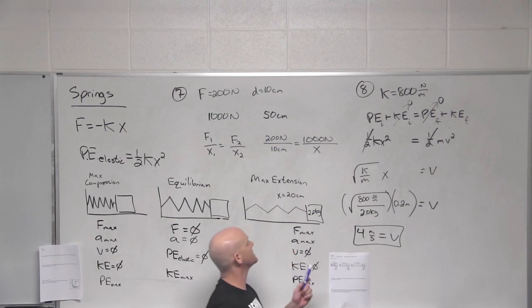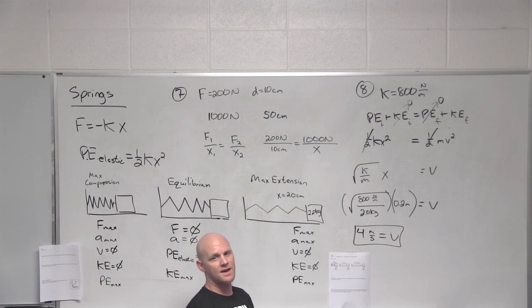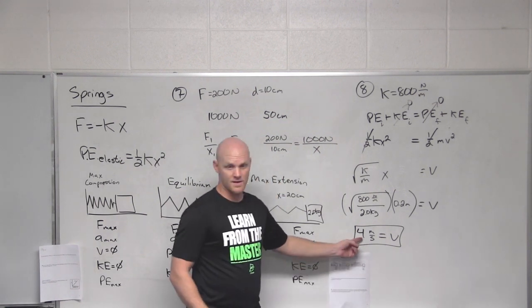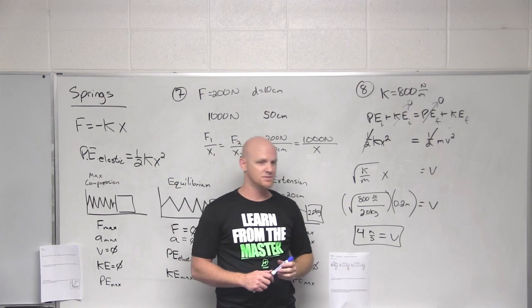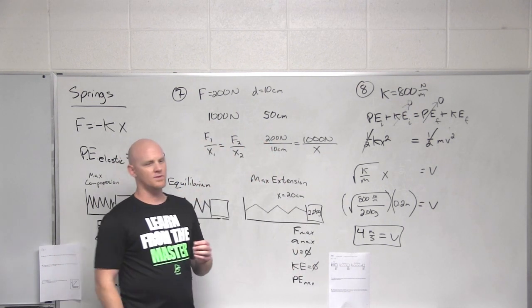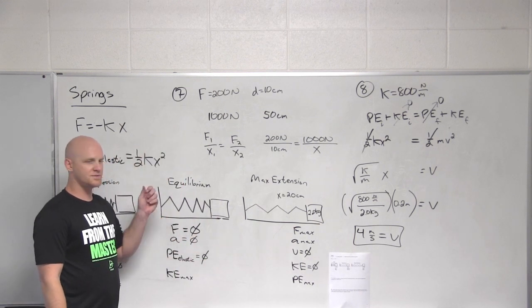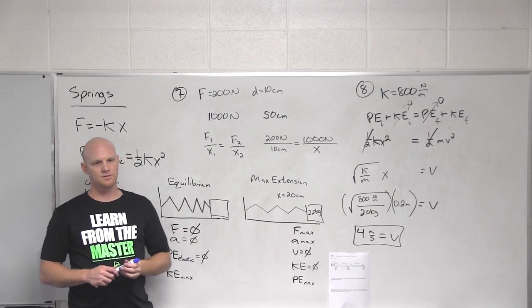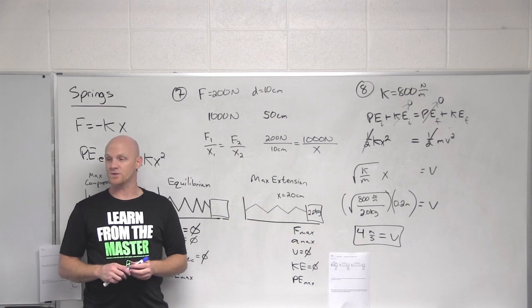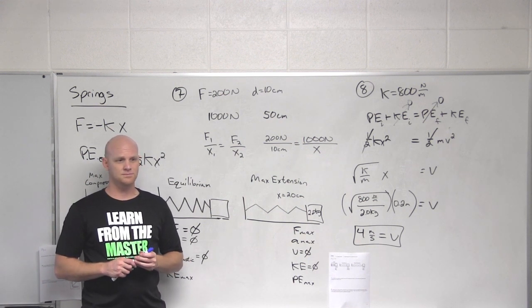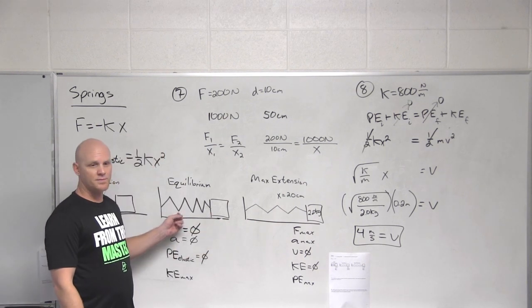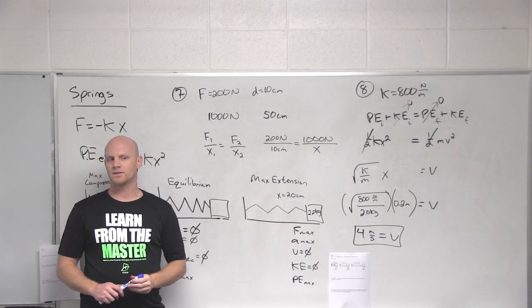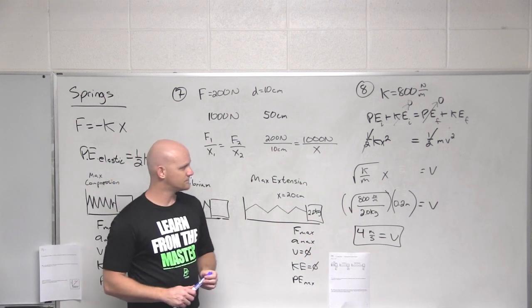I could ask a slightly different question: how much mechanical energy would it have at any point along its motion? Now that we know the velocity, we can calculate the kinetic energy, or use the original potential energy — that total should be constant at any point. If the velocity through the equilibrium position were only 3 meters per second instead, what could you conclude? Friction or some other non-conservative force did work. You'd find the potential energy at max extension, find the kinetic energy at equilibrium, and take the difference to find how much negative work your non-conservative forces did.